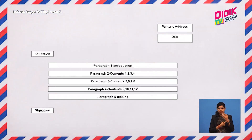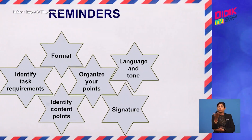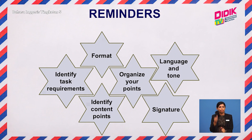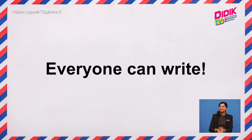Alright then, boys and girls, very quickly — this is the layout of your informal letter. Remember to leave one line gap after your date, salutation, and each paragraph. It will make your letter neater and more presentable. Before we end, these are the items we have talked about earlier. I hope you have found this lesson helpful. Good luck to all of you out there. Keep practicing, don't give up, and remember — everyone can write!